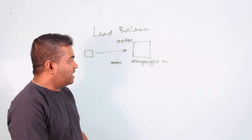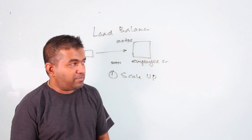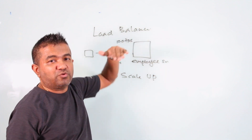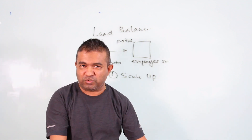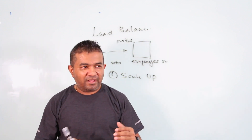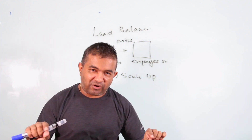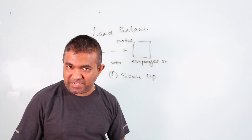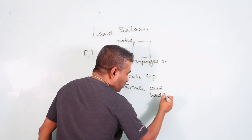There are two options. One is scale up — you can increase the memory, processor, bandwidth, and overall server performance. But you always hit a ceiling. For example, like a home machine, you can buy new RAM, but your motherboard has a limited number of memory slots, and each slot has a maximum capacity. So scale up always has a limit.